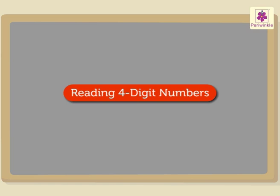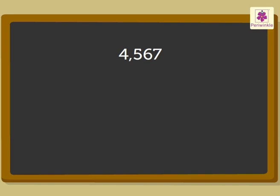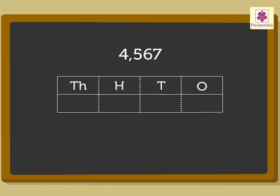Now, let us look at how to read four-digit numbers. Look at the number 4, 5, 6, 7. Place each digit of the number in the place value chart. Now, let us read it: four thousand, five hundred, sixty-seven.